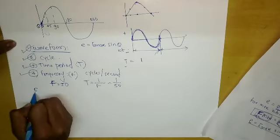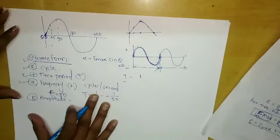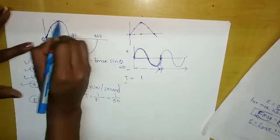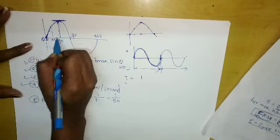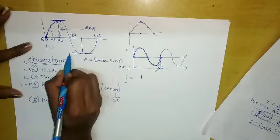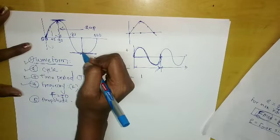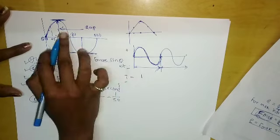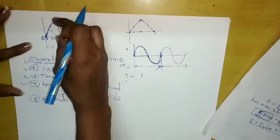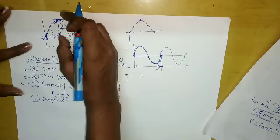Amplitude is the maximum value — positive or negative — that the alternating quantity attains during one cycle. On the graph, the highest point of the curve is the amplitude. In the negative half also, the lowest point is the amplitude. The maximum value portion of the cycle is the amplitude.